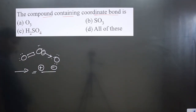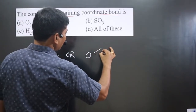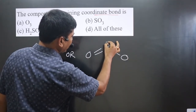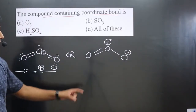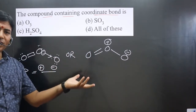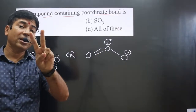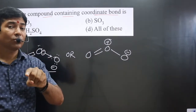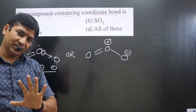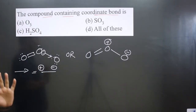This structure can also be written as oxygen double bond oxygen, and in place of the coordinate bond, one covalent bond with one oxygen carrying positive charge and the other carrying negative charge. Resonating forms will be there. Always keep in mind: oxygen forming more than two bonds carries positive charge, and oxygen forming less than two bonds carries negative charge. So in ozone, a coordinate bond is present.